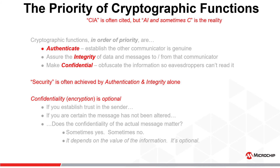Many people equate encryption with security. It is not security — it's part of security. We need more to enable security. Encryption is actually the least important element of security in many situations. Some people use encryption as authentication. For example, they believe if the lighting controller encrypts a message to the light fixture and the light fixture can decrypt it, then everything is okay. It's not okay. That is a misuse of encryption and leaves open a number of potential vulnerabilities.